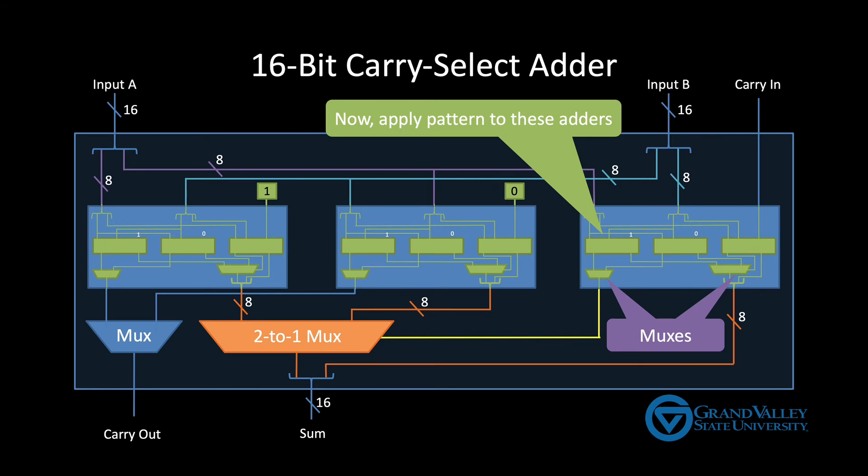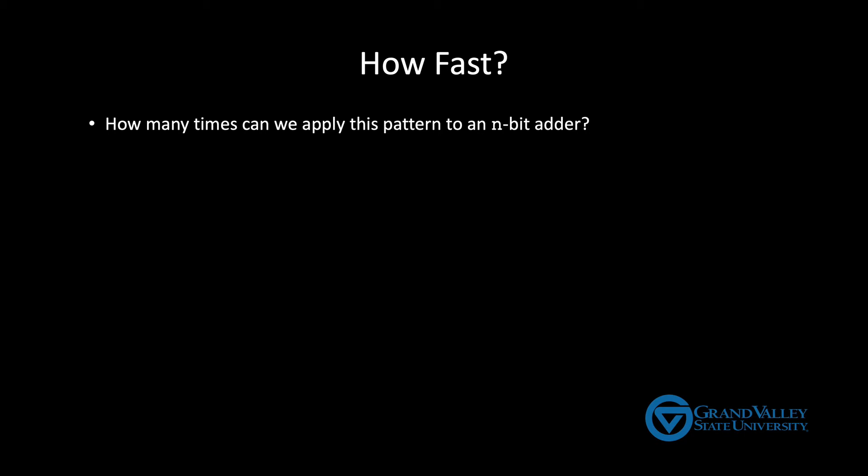Which raises the question how many times can we do this? How many times can we apply this pattern and continue to reduce the running time? So keep in mind that each time we apply this pattern the width of the component adders get cut in half. We go from 16-bit ripple carry adders to 8-bit to 4-bit and so on. So what we're really asking is how many times can we cut N in half before we get down to nothing. And that's the very definition of log base 2 of N.